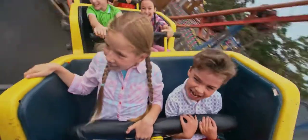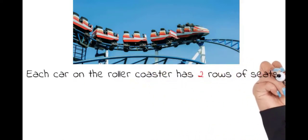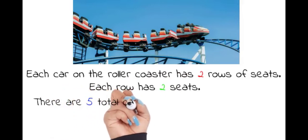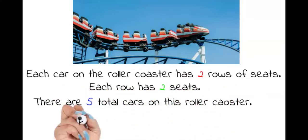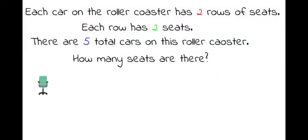Have you ever been on a roller coaster? I'm sure you have. If you haven't, it's okay. We're going to do a multiplication word problem that involves two rows of seats, each row having two seats, and there are five total cars on this roller coaster. How many seats are there in all? Well, remember, each car on the roller coaster has two rows.